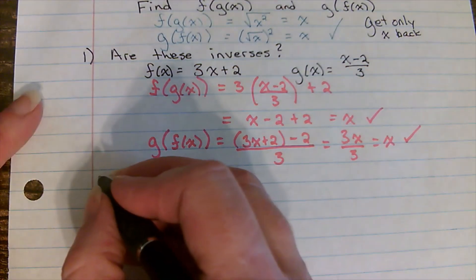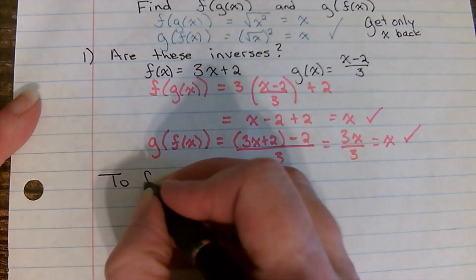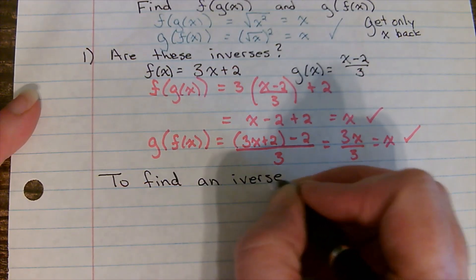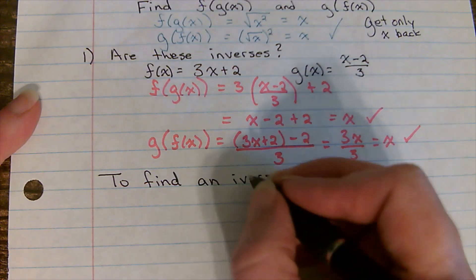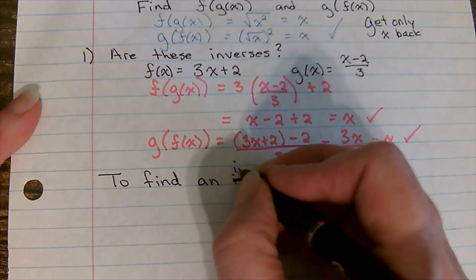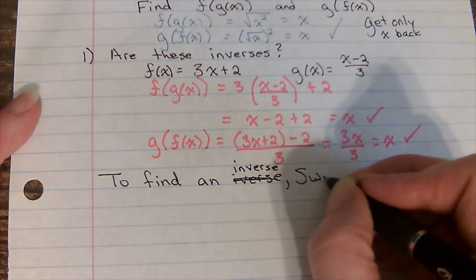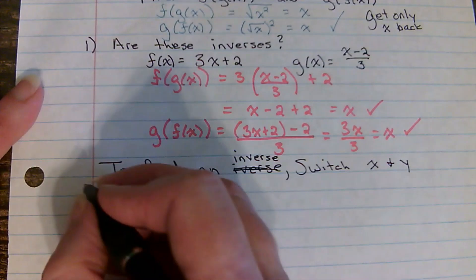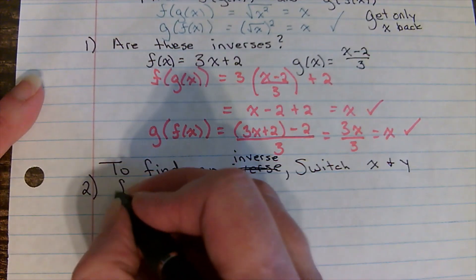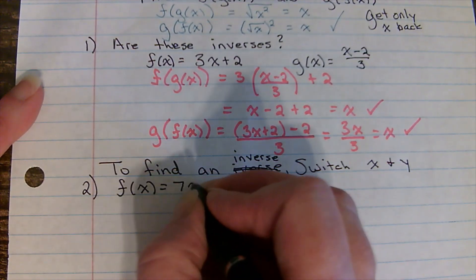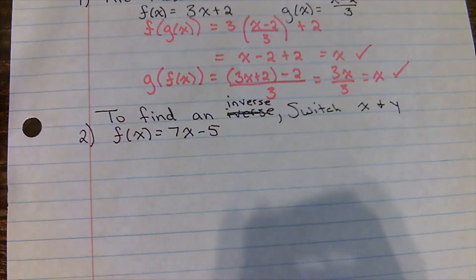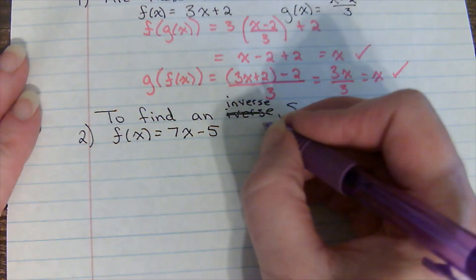Now, what if I wanted to find an inverse? Well, to find an inverse, I'm going to switch x and y. So f of x equals seven x minus five. Well, I'm supposed to switch x and y, but I don't see a y. Oh, that's right. F of x is another name for y.